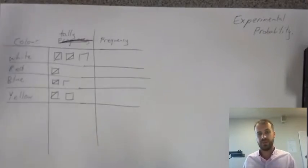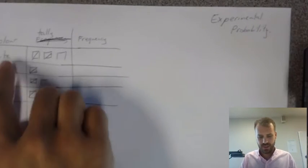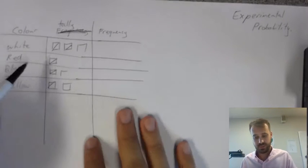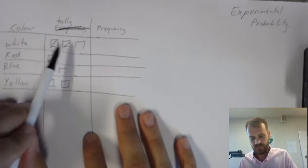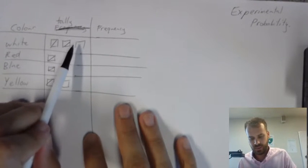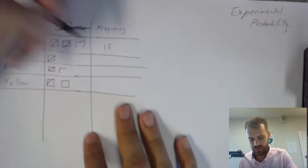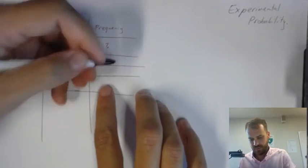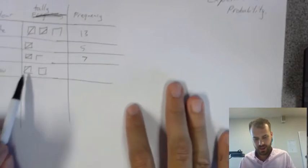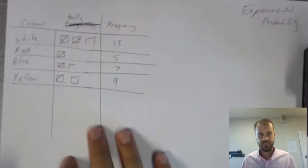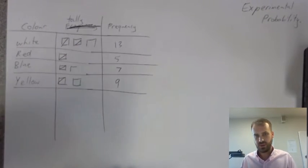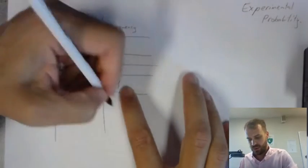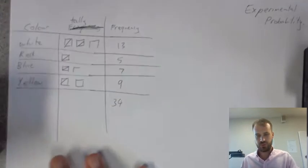Okay, that's probably enough experiment. So, you can see here, I know I've got a weird tally system, but believe me, lots of people do this across the world. So, 5, 10, 11, 12, 13, 13 white ones, 5 red ones, 7 blue ones, and 9 yellow ones. Alright, that means I did a total of 34 trials.